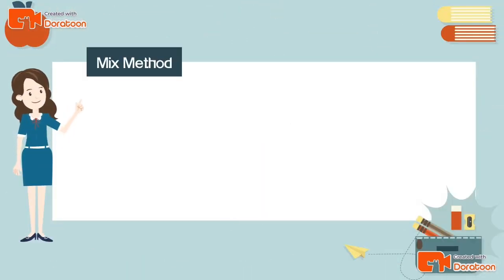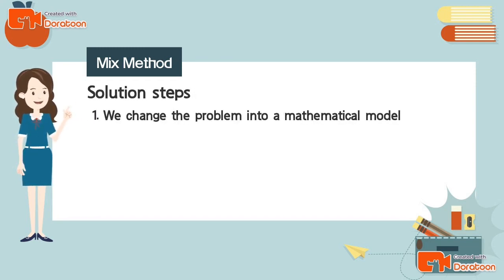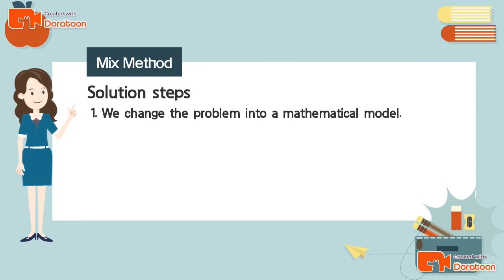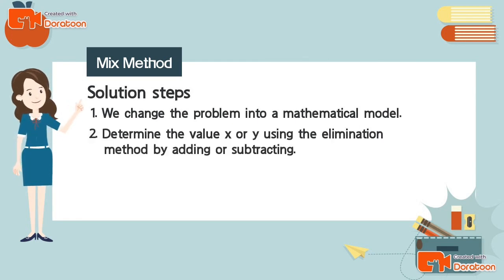Next, we will solve the problem using the mixed method. The first step is to change the problem into a mathematical model — converting the sentences into equations containing one or two variables. The second step is to determine the value of x or y using the elimination method by adding or subtracting.